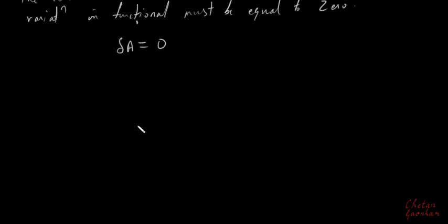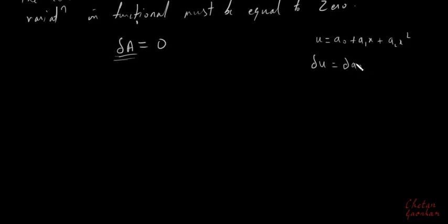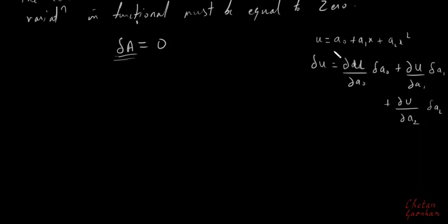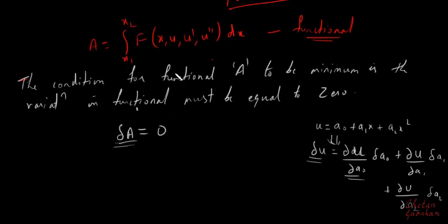We have already seen that this variation in A can be written in terms of its total derivative. If we remember, last time we considered u as a trial function: a₀ + a₁x + a₂x². The variation of u was written as the partial derivative of u with respect to a₀ times δa₀, plus partial derivative with respect to a₁ times δa₁, and so on.